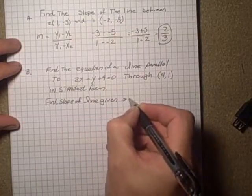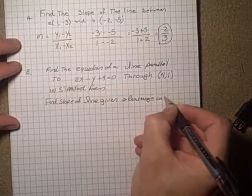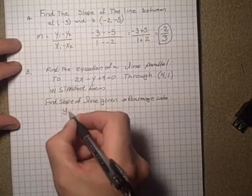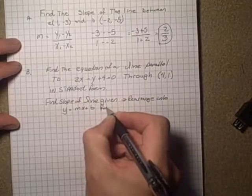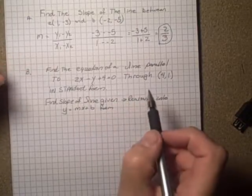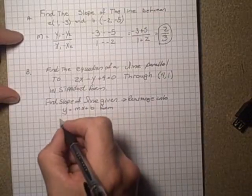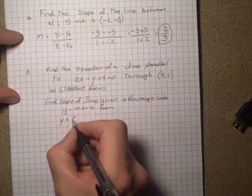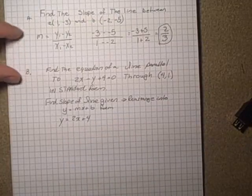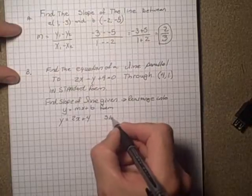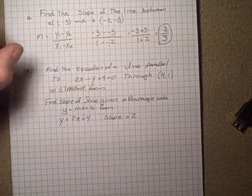We just rearrange it into y = mx + b form. Looking up here, I'll move the y over by adding y to both sides. So that would be y = 2x + 4. That tells us the slope is 2, positive 2, which is the coefficient in front of the x.